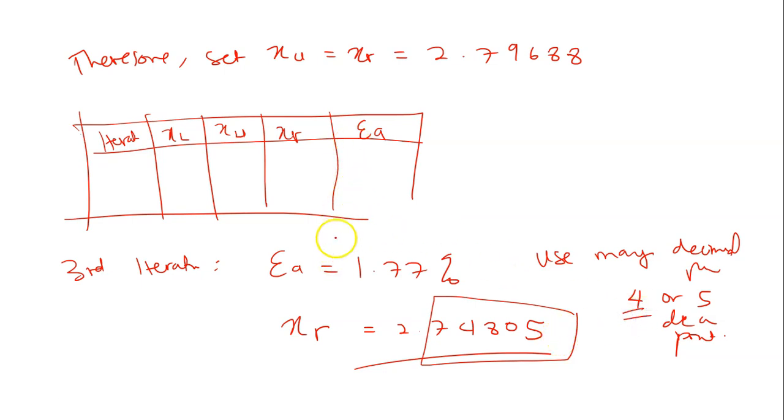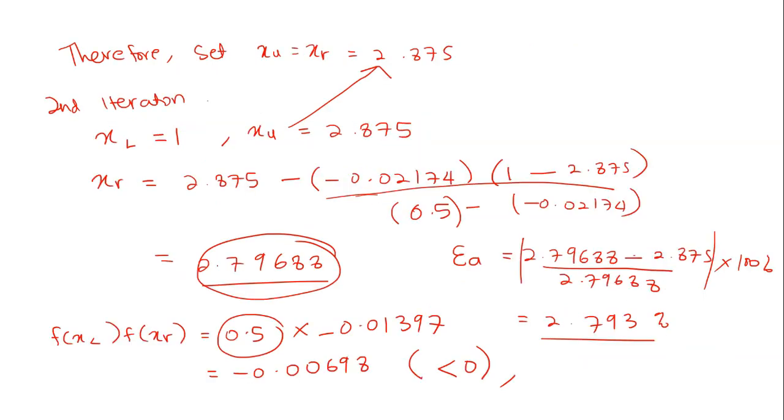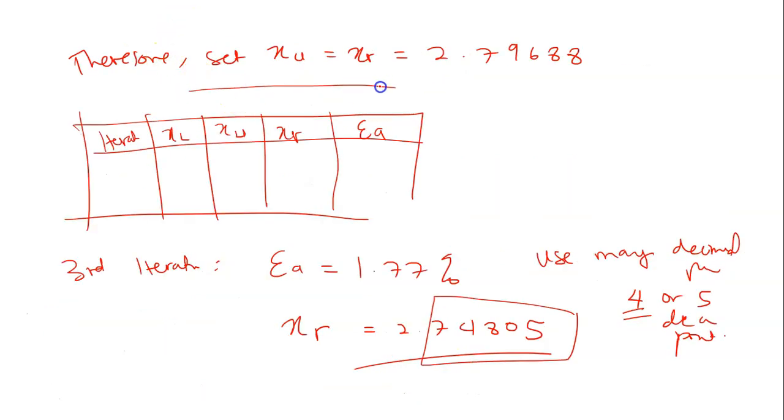And also you need to show for this type of calculation. This is very crucial here. This part. And this one to show that is it less than 0 or more than 0. And then make this judgment. Therefore set x equals to x_r. So this definitely you will get one mark here. Because you are able to make decision based on your finding. You are able to make decision to proceed to the next calculation.